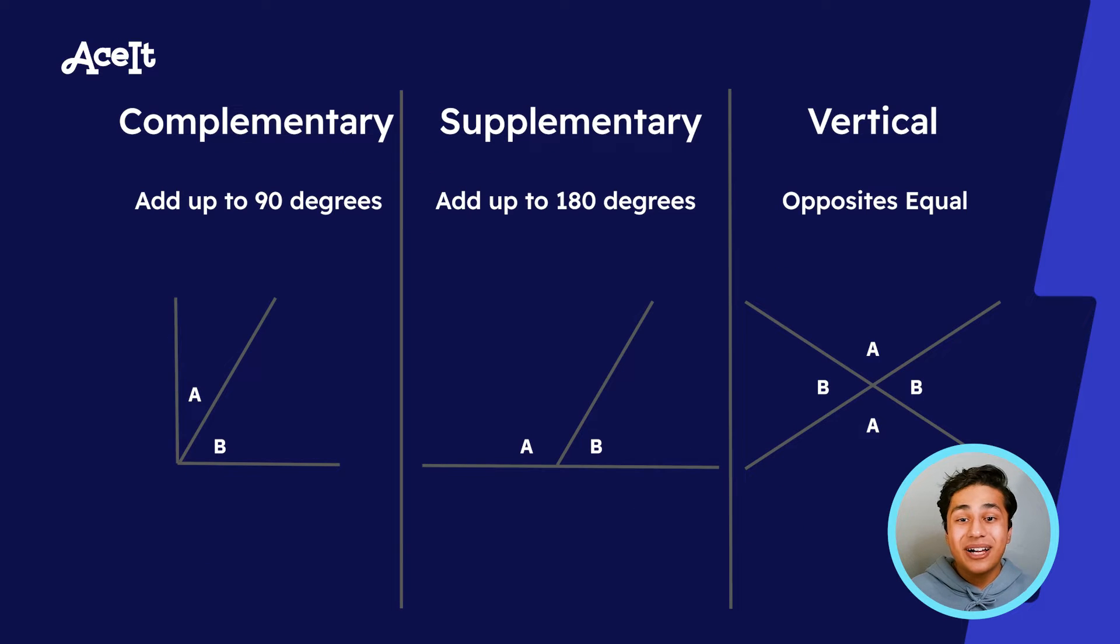Next up, let's talk about complementary, supplementary, and vertical angles. Oftentimes, you'll see angles created by intersections of lines. Many angle problems on the SAT will have lines intersecting and will have you determine angle lengths. You will usually have to utilize the concepts of complementary, supplementary, and vertical angles in order to do this.